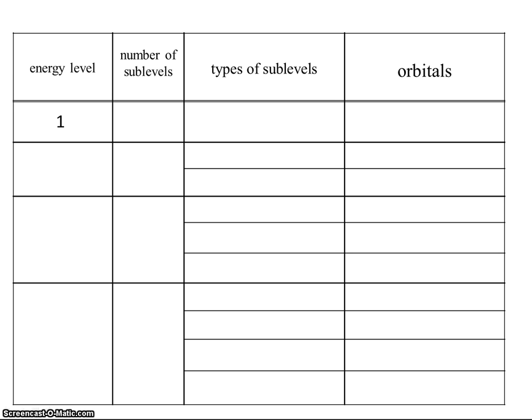Energy level 1 has one sublevel, and it's s. The s sublevel has one orbital.